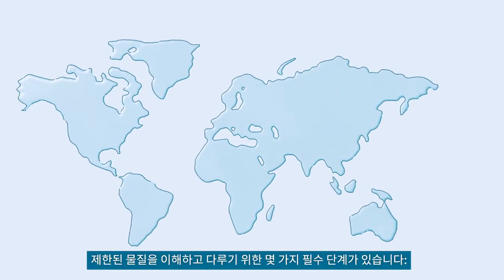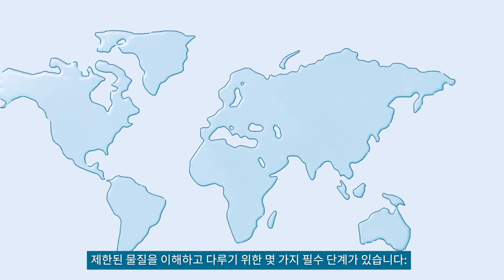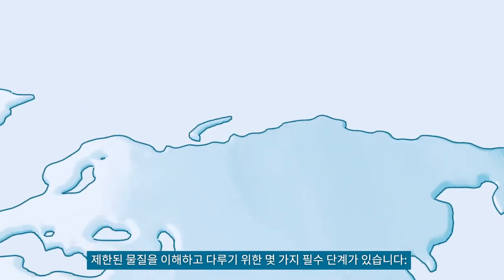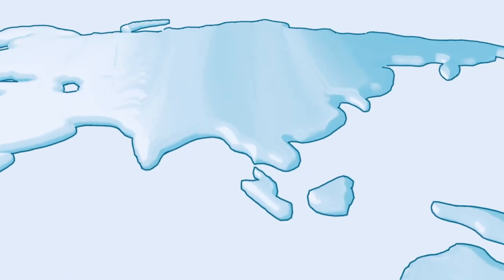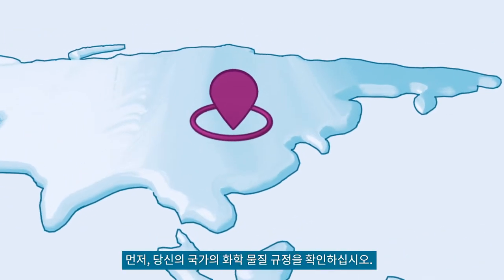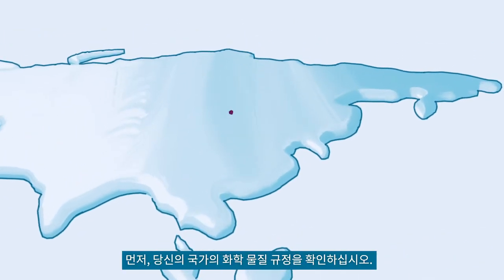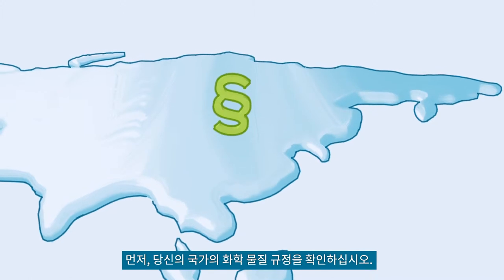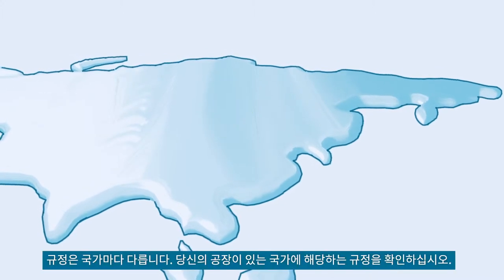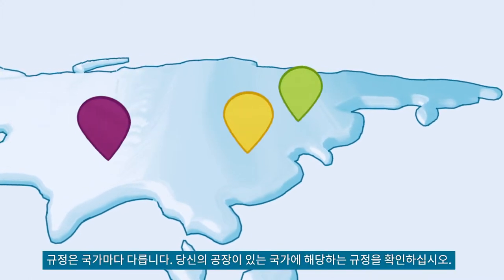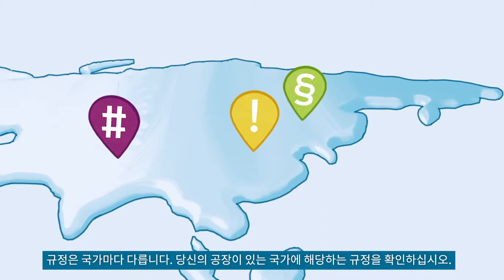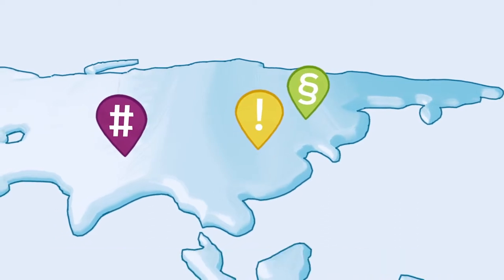There are a few essential steps to understanding and dealing with such restricted substances. First, check the national chemical regulations in your country. Regulations differ among countries, so check those where your factory is located.